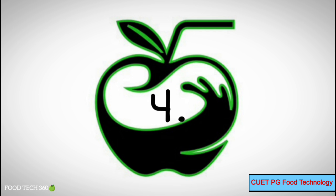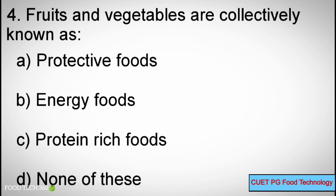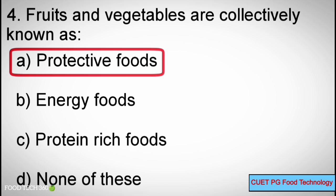Q4: Fruits and vegetables are collectively known as — A. Protective foods, B. Energy foods, C. Protein-rich foods, D. None of these. Correct answer: A. Protective foods.